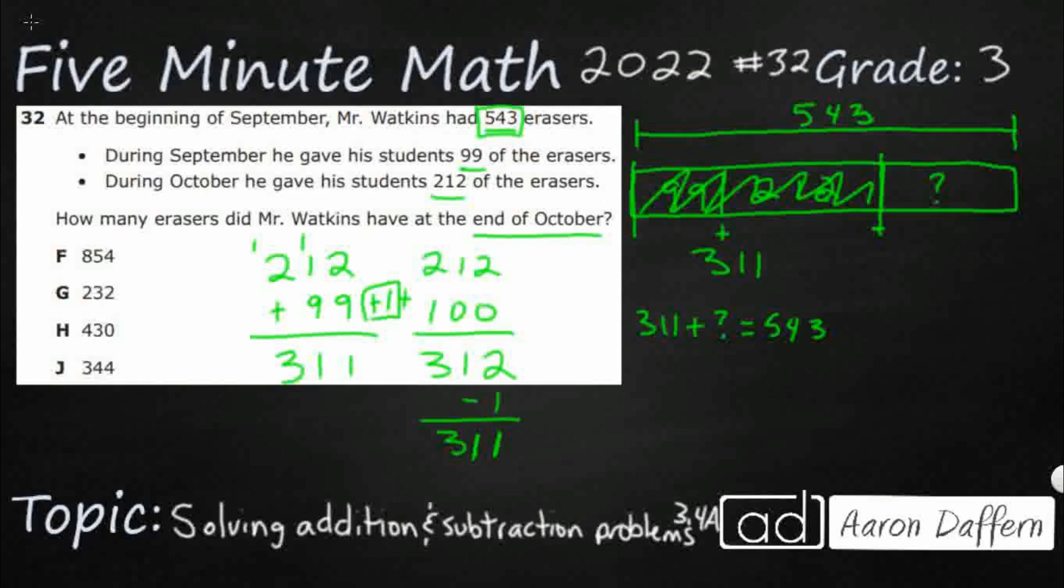I don't know what that missing addend is, but I do know that I could use a related subtraction sentence, because addition and subtraction are inverse operations. And when we look at fact families, we always have two addition and two subtraction sentences. All right, so I could do 543 minus 311, and that could get me my missing number.